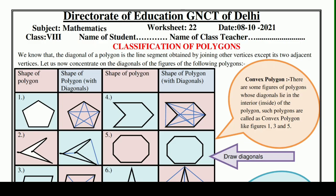Hello and welcome to Lavneesh Sarki class. This is the Direct Rate of Education, GNCT of Delhi's worksheet. Worksheet number 22, and it is only for class 8 students. It is taken from the subject mathematics, and we will learn and understand about the classification of polygons in this worksheet.